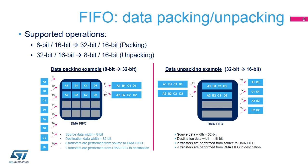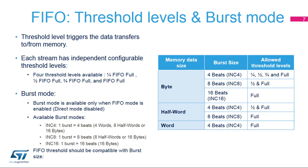Thanks to its internal FIFO, the DMA stream can reduce software overhead and the number of transactions over the AHB bus. In burst mode or in single mode, the FIFO threshold level determines when the data in the FIFO should be transferred to and from memory. There are four configurable threshold levels per stream, starting from one-quarter FIFO full to FIFO full.